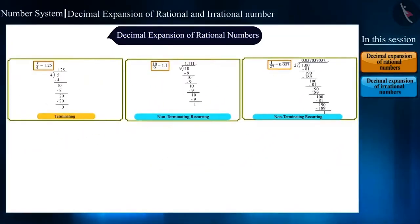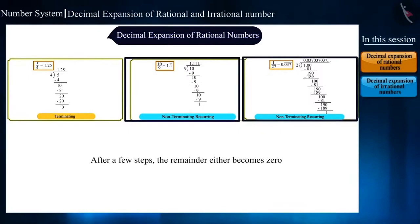If we compare all three examples, we can say that in the decimal expansion of rational numbers, after a few steps, the remainder either becomes 0 or starts repeating itself.